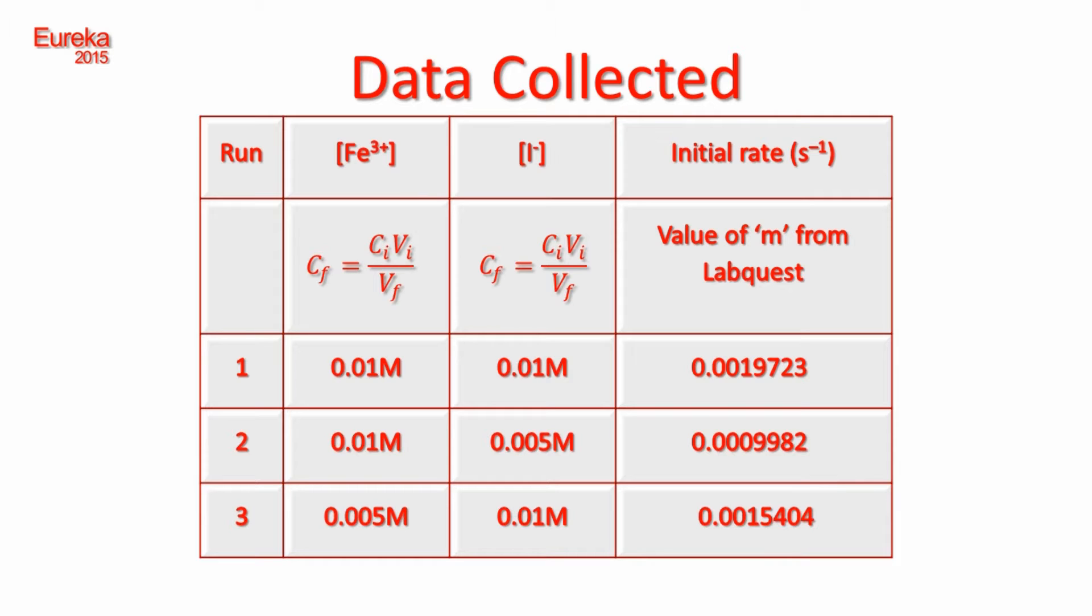If we compare trials 1 and 2, the concentration of the iron 3 plus ions remain the same. But the concentrations of the iodide ions in the second trial is half that of the first one. Hence, if there is a change in rate, it has to be due to this change in concentration of iodide ions.